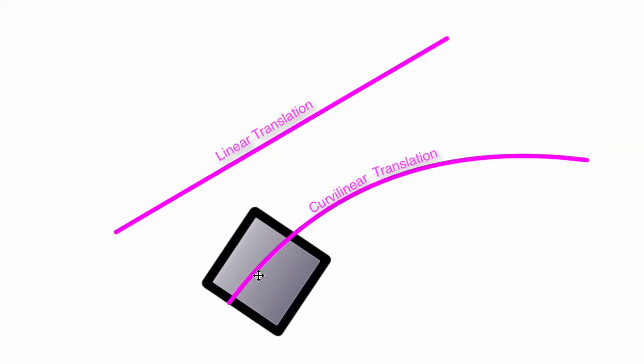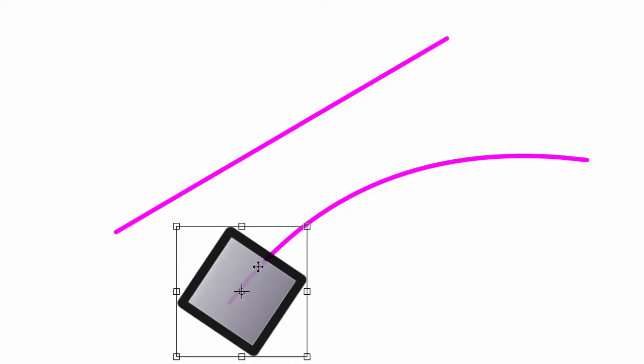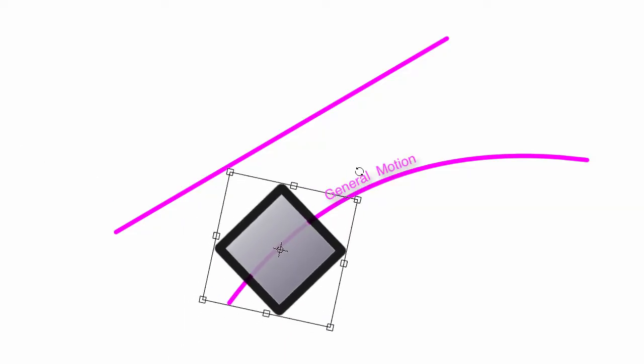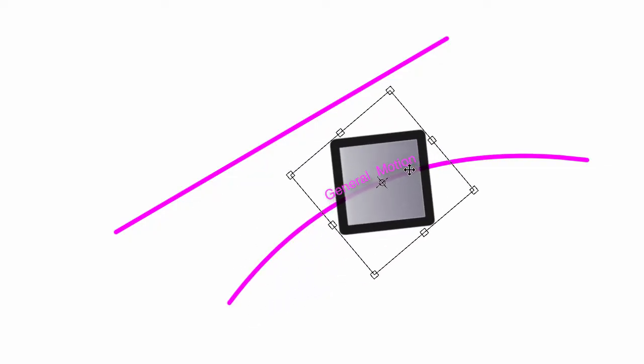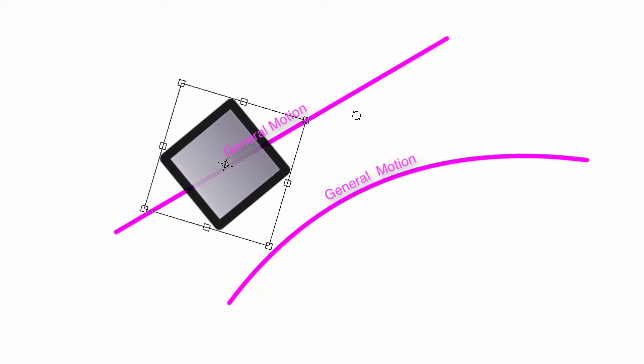If it was rotating while going along something like this, or even going that way as it went, then again that would be considered general motion, whether it's following a curved path or a straight path.